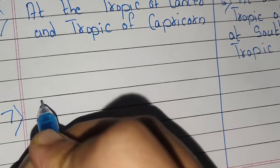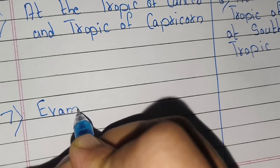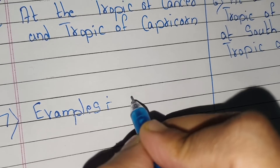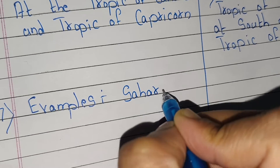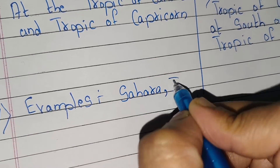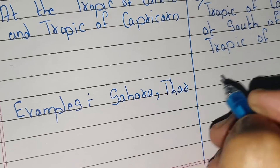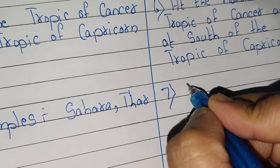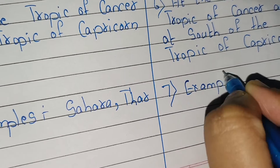Seventh and last point: examples of hot deserts are the Sahara and the Thar. And in cold desert, examples include — thank you friends, thanks for watching.